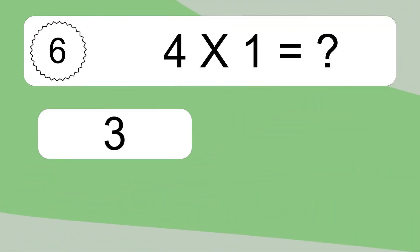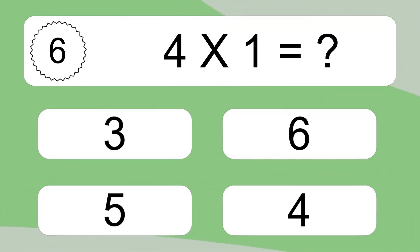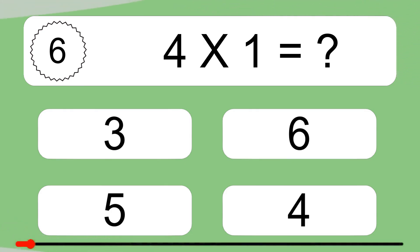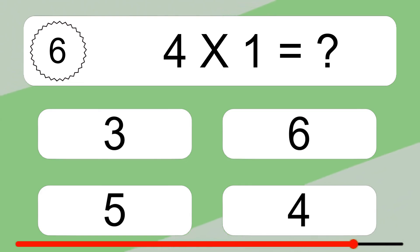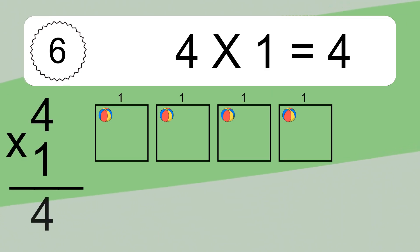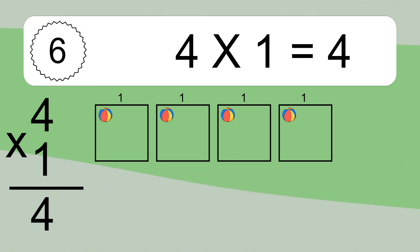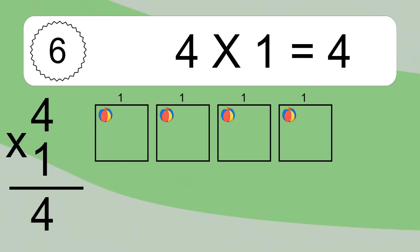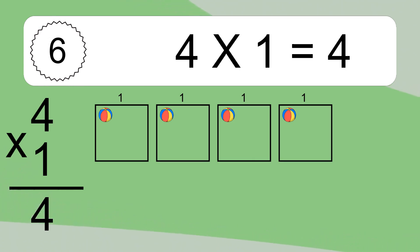4 times 1 equals what? 4 times 1 equals 4. We have 4 boxes, and each box has 1 colorful ball inside. If you count all the balls in all the boxes together, you will have 4 times 1 balls. This equals 4 balls.